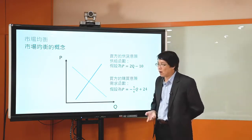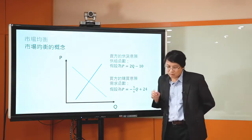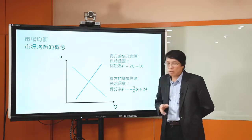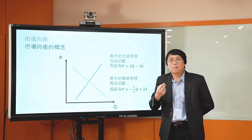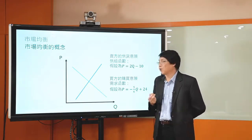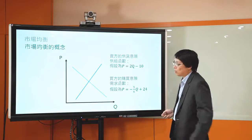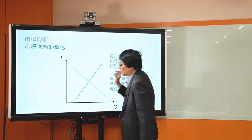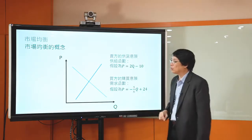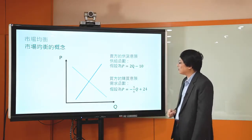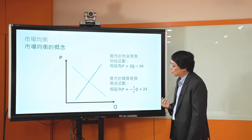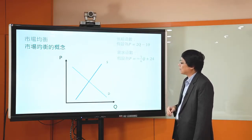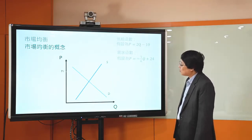我們在討論的是：給定不同的價格之下，價格怎麼去影響廠商的供貨意願。廠商的供貨意願是，當價格高的時候，為了追求利潤極大化，他願意且能夠供應到市場上的數量也會變多。可是到底能不能真的實現？這個是他的意願，他的意願能不能實現，你要看買家接不接受。